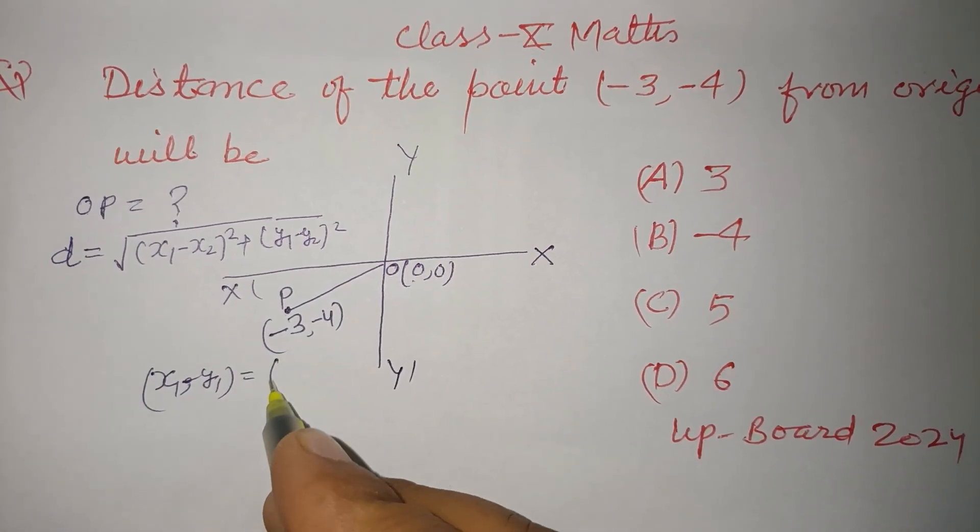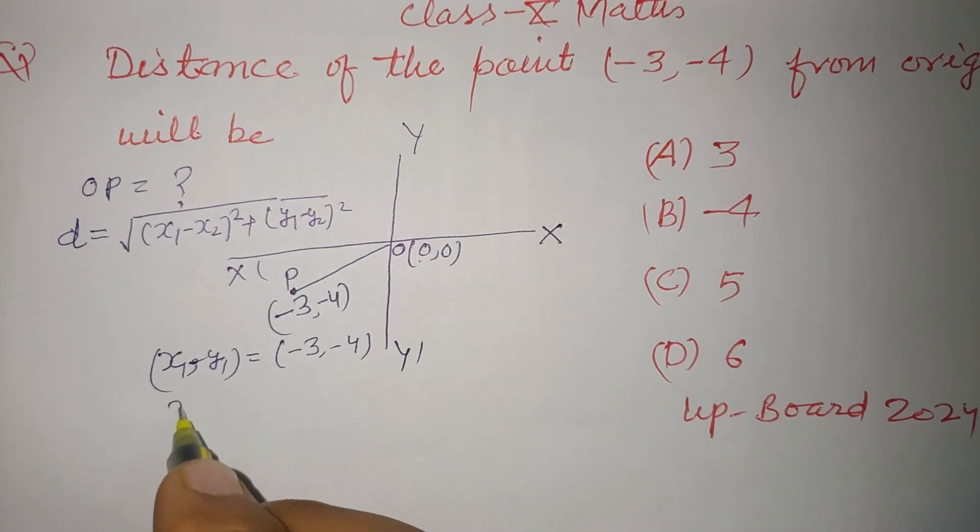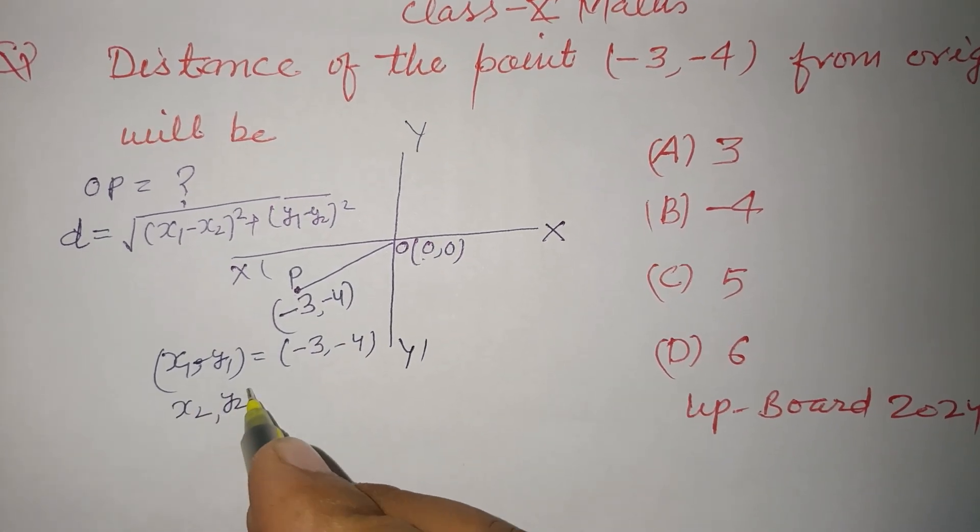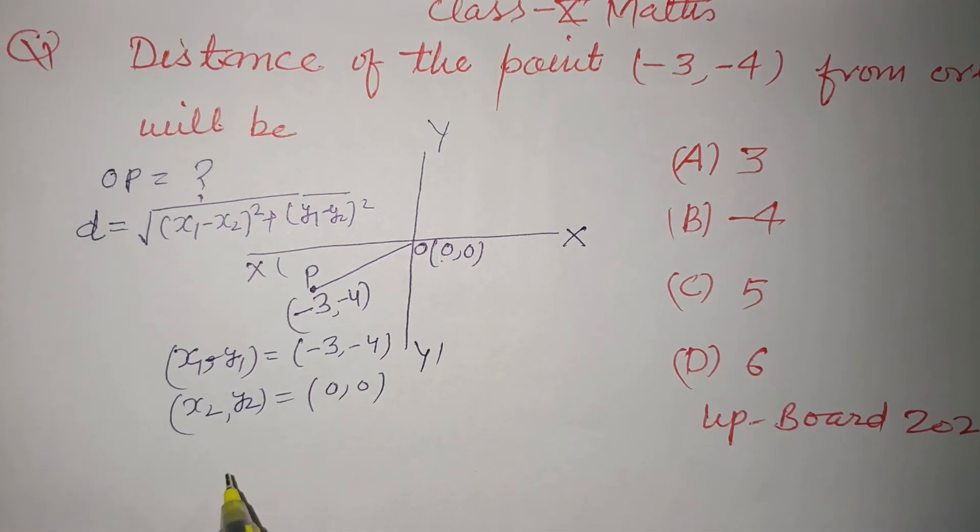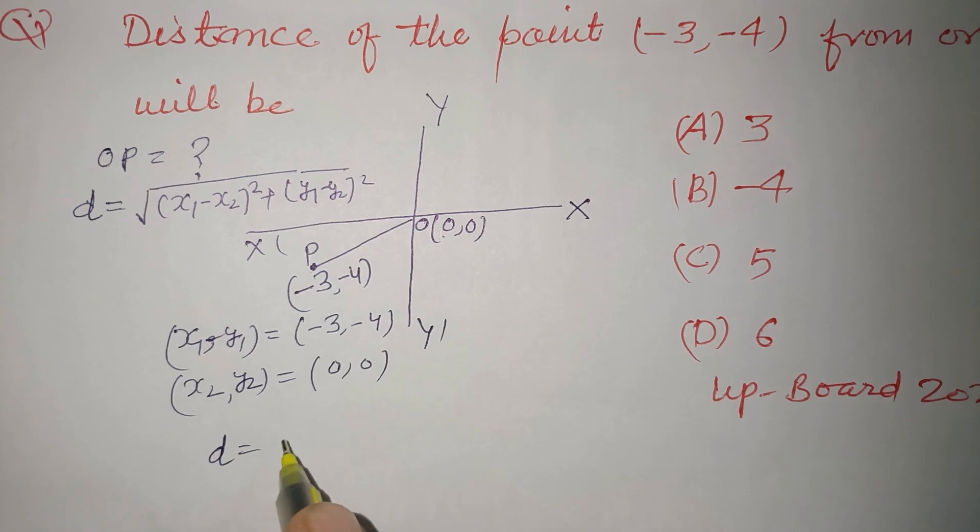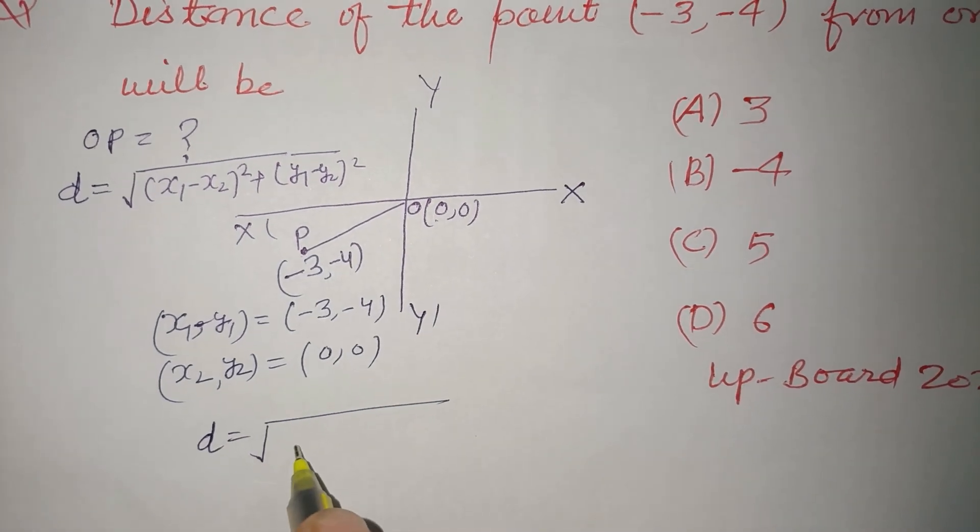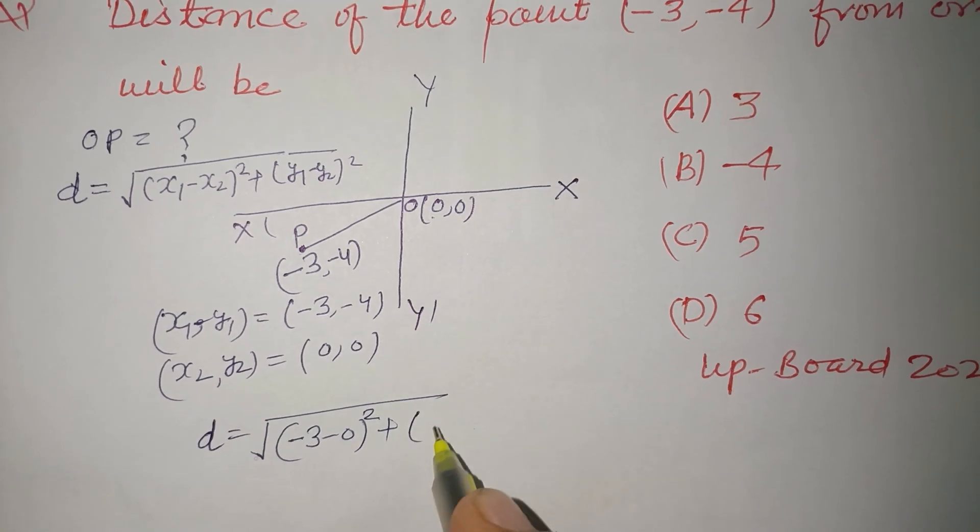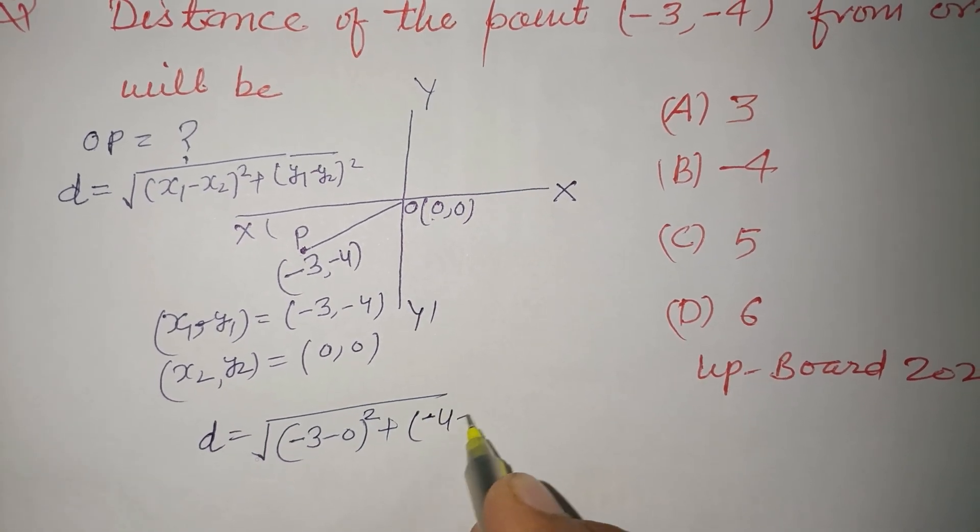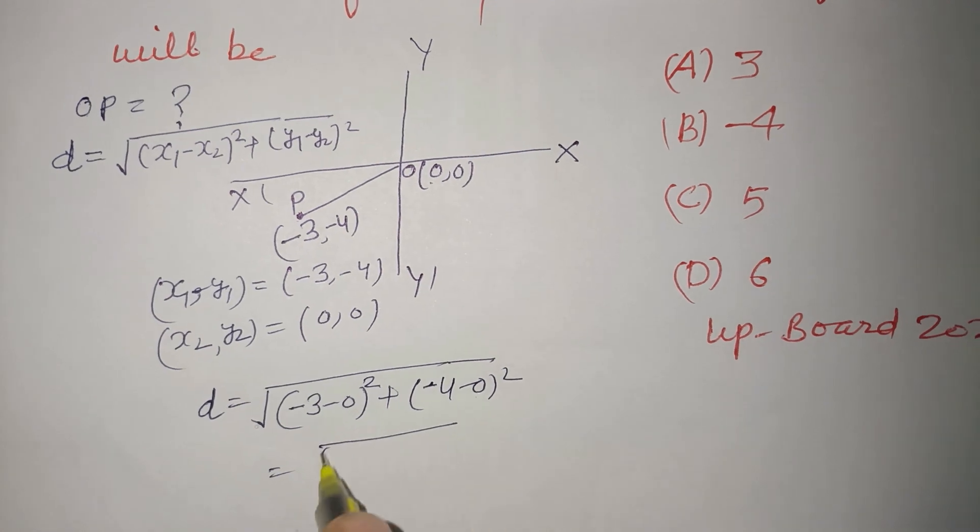Here (x₁, y₁) is given to us as (-3, -4) and (x₂, y₂) is given to us as (0, 0). Therefore D is under root [(-3 - 0)² + (-4 - 0)²].